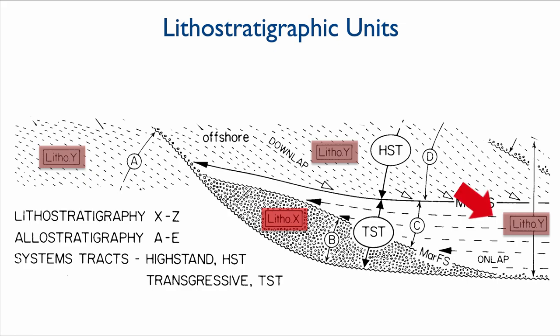Notice that lithostratigraphic unit Y changes in thickness throughout the basin. It's very deep where I have this red arrow because multiple units of clays are contained into that one lithostratigraphic unit. But because everything is clay-rich, it's only one lithostratigraphic unit. And you already know that this is not necessarily the best way to subdivide the rock record.